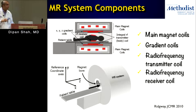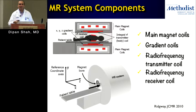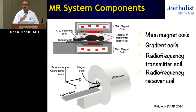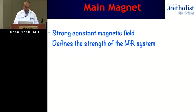The receiver coils can be within the bore or within the magnet itself, and there are also receiver coils we place on the patient. If you've seen or had an MRI scan done, you'll notice you get some coils placed on top of you. Those are receiver coils designed to be placed very close to the object being imaged, to help improve image resolution and image quality.